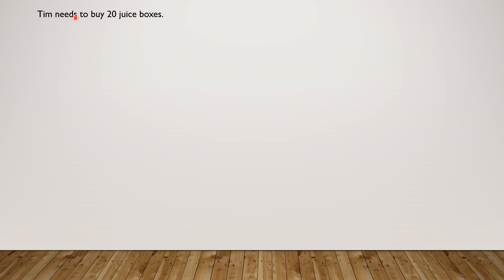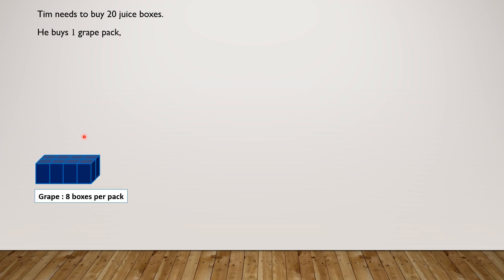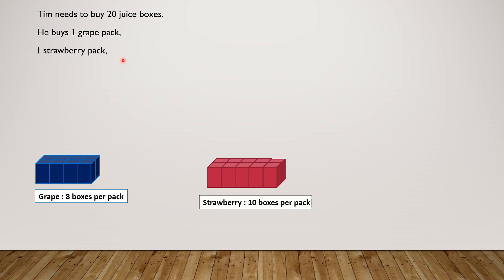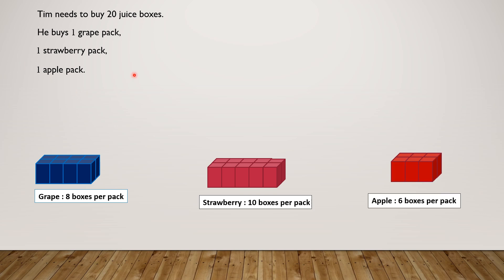Tim needs to buy 20 juice boxes. He buys one grape pack — this is our grape pack — one strawberry pack — our strawberry pack — and one apple pack — our apple pack. How many extra juice boxes will he have? First, we will add all the boxes in the 3 packs. Then it will be easy for us to understand how many extra there are.